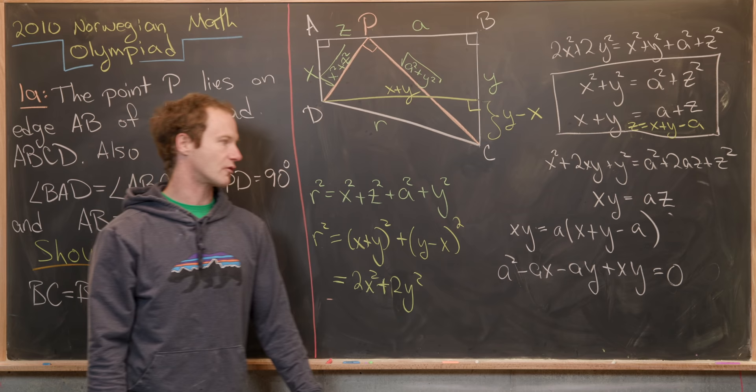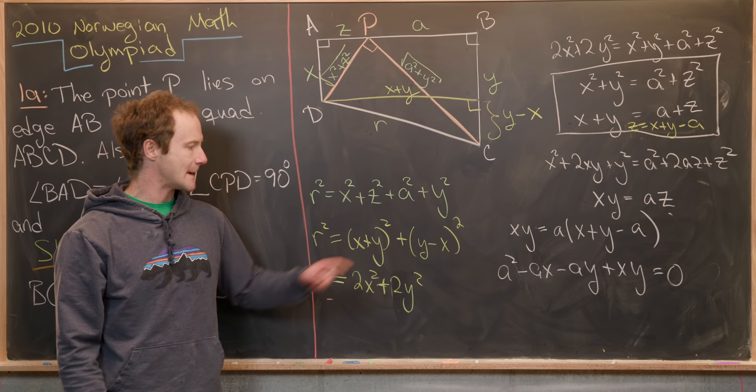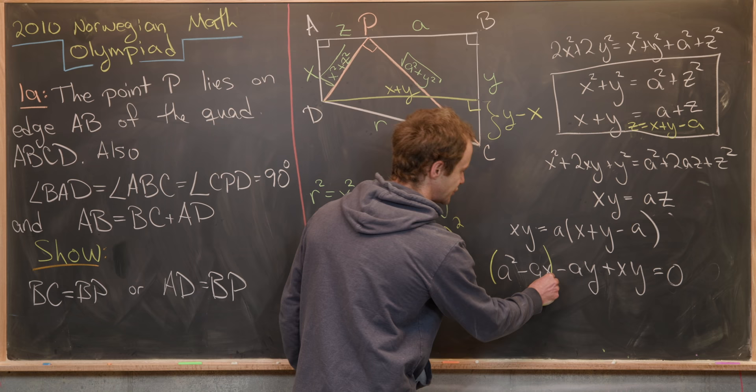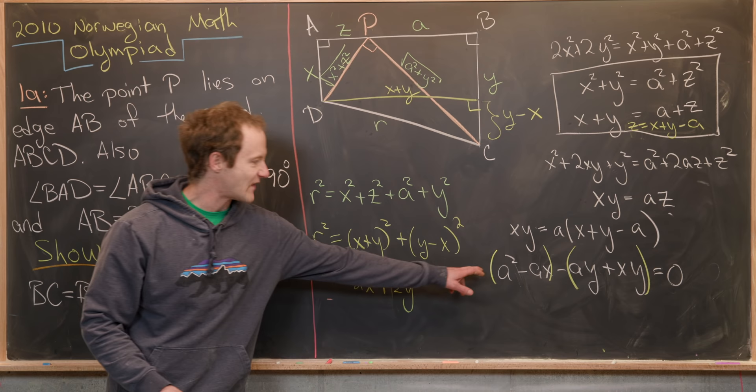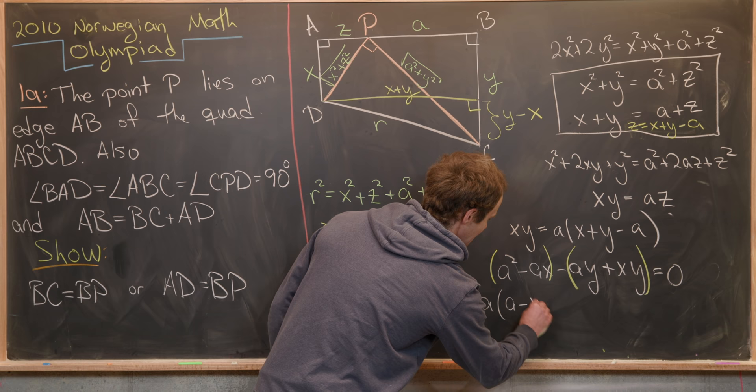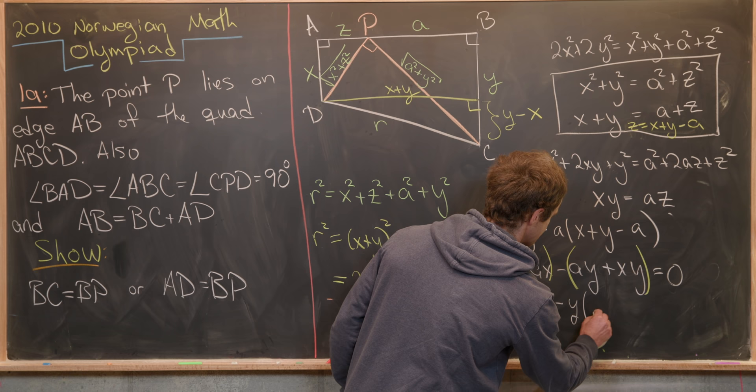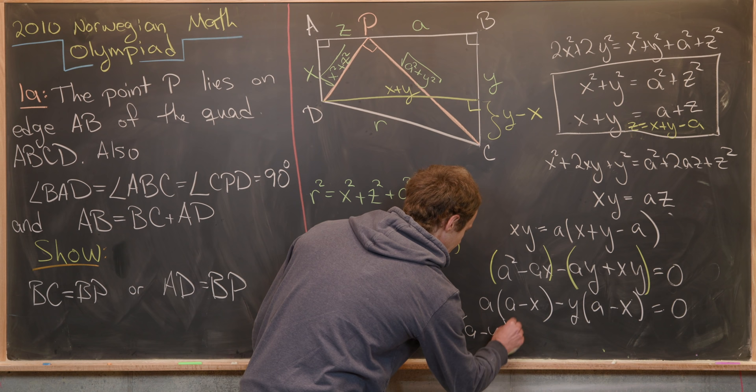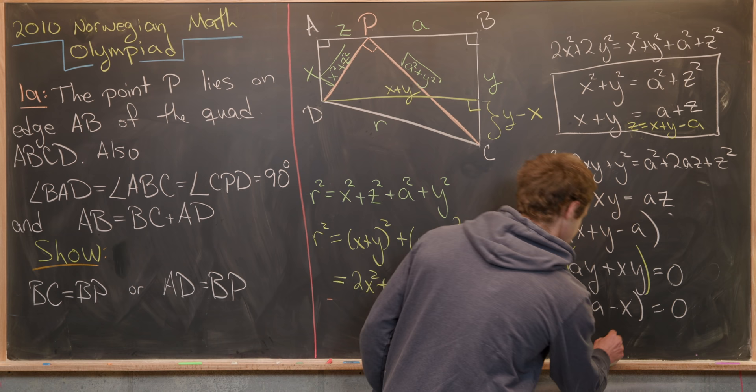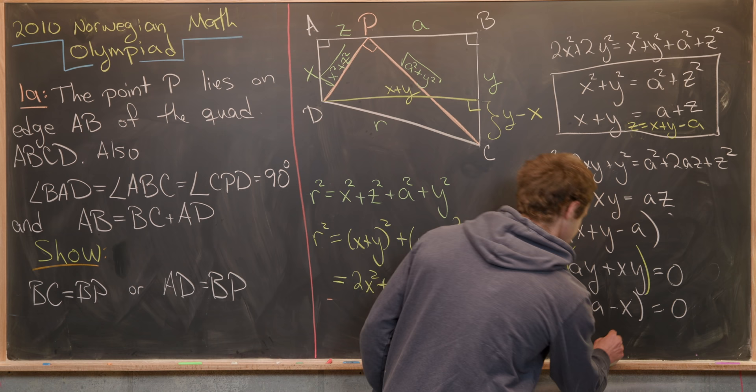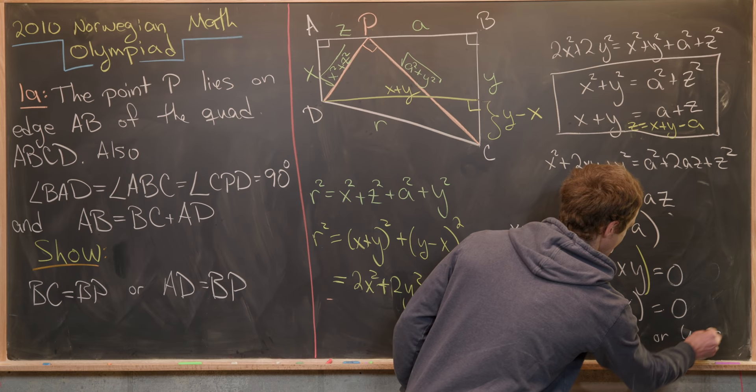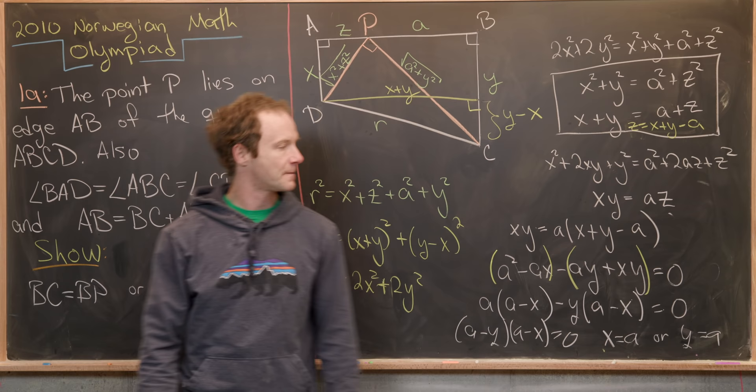So what I did is I distributed the A on the right-hand side, and then I just moved it all over to the left-hand side. But now notice we can do some grouping and factoring. I'll group these first two terms, and then I'll group these second two terms. I'll factor an A out of these first two terms, leaving me with A times A minus X. I'll factor a minus Y out of the second two terms, leaving me with A minus X. And then finally, I'll factor an A minus X out of the whole thing, leaving me with A minus Y times A minus X equals 0. But now notice that that tells us that X equals A or Y equals A. But notice by our diagram, that immediately gives us that BC equals BP or AD equals BP.